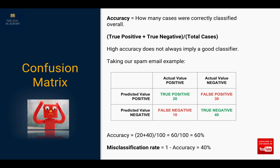When it comes to identifying spam accounts or fake IDs and things like that, accuracy can be misleading. In this case, accuracy will be 20 plus 40 divided by 100, since that's the total number of records, giving an accuracy of 60%. There is also something called misclassification rate, which is 1 minus accuracy — in this case that will be 40%.